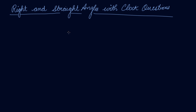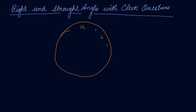This is a clock. Here it's 12, then 1, 2, 3 at the center, 4, 5, and then 6 directly opposite 12, then 7, 8, 9 opposite 3, 10, and 11. This is how the clock is.